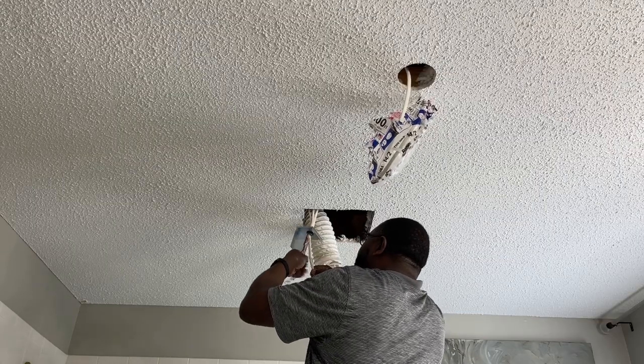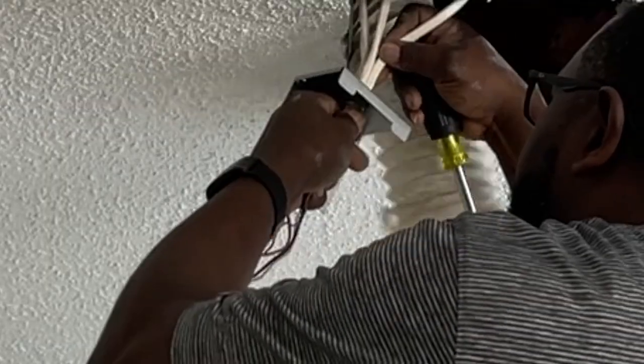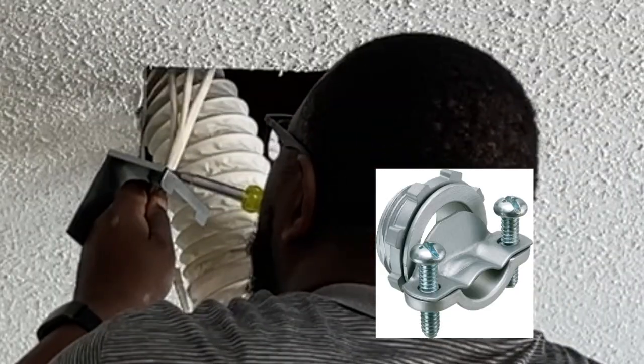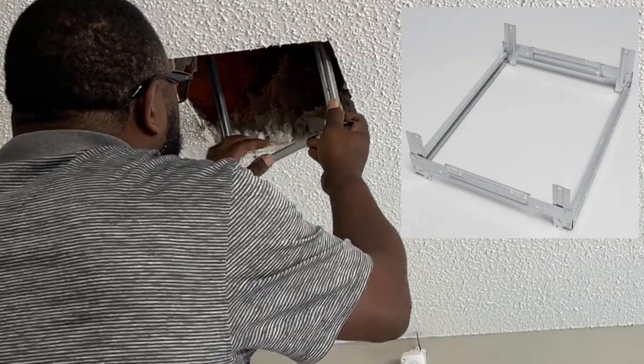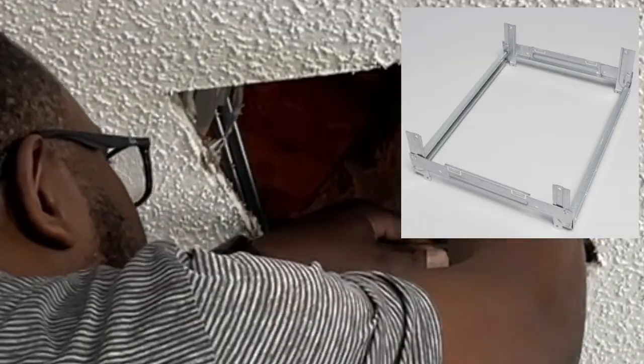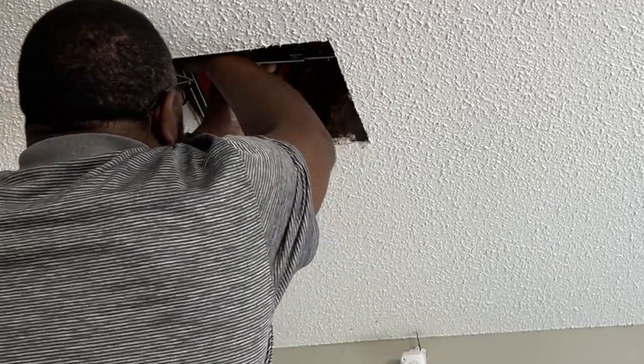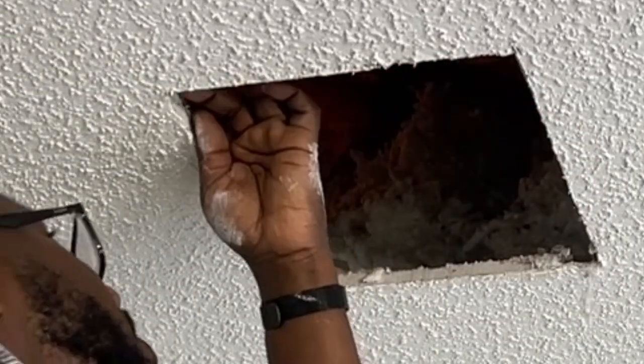As you can see I've already ran some 14.2 Romex from the new light location through the Romex connector to the electrical box. The provided bracket is designed to go joist to joist and the only thing you have to do is just screw it in on either side.